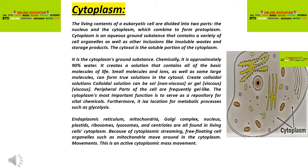An important function of cytoplasm is that it acts as a storage house for many chemicals. It is also the site for different metabolic processes such as glycolysis. Living cells contain in their cytoplasm several organelles such as endoplasmic reticulum, mitochondria, Golgi bodies, nucleus, plastids, ribosomes, lysosomes, and centriole.